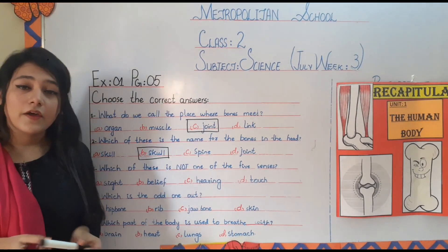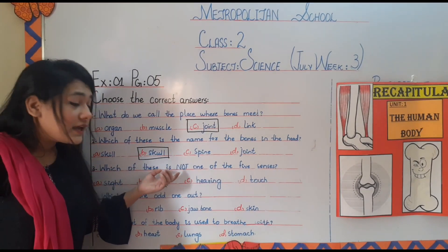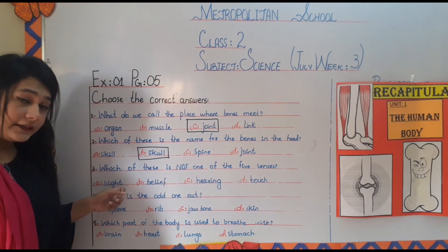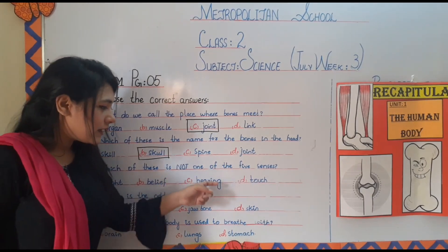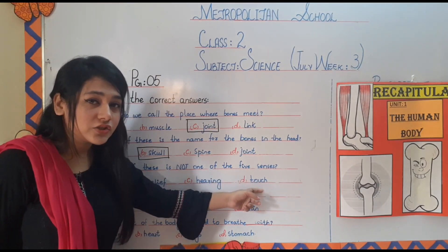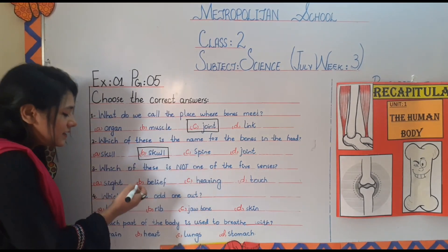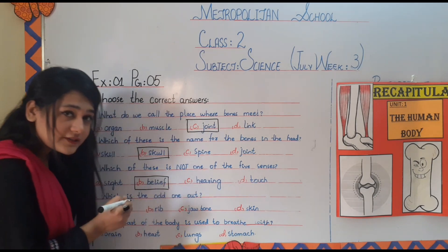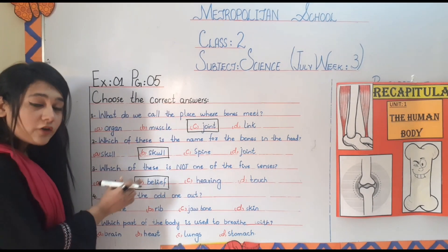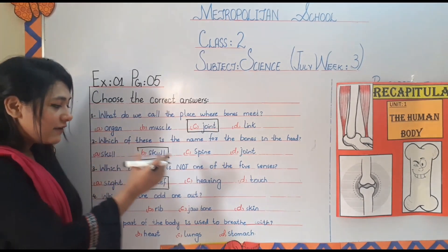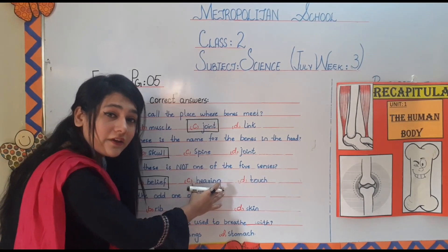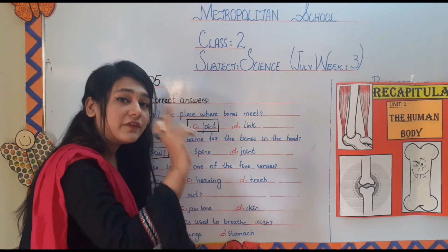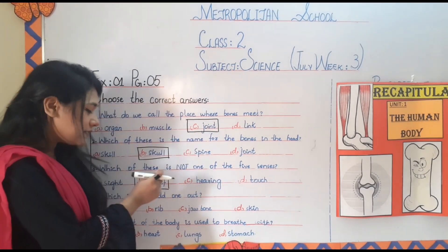Number three: which of these is not one of the five senses? The options are sight, believe, hearing, or touch. The answer is believe, because we have the sense of sight through our eyes, the sense of hearing through our ears, and the sense of touch — but believe is not one of the five senses.